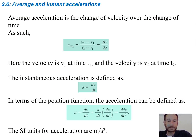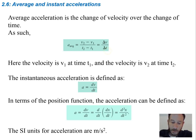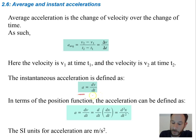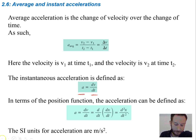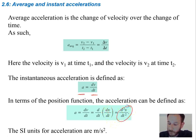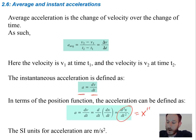Now we're talking about acceleration. Average acceleration is the change in velocity over the change in time — just like velocity was Δx/Δt, acceleration is Δv/Δt, where v1 is the velocity at time 1 and v2 at time 2. Instantaneous acceleration is the derivative: a = dv/dt, which is the second derivative of position, written as x double prime. The SI units for acceleration are meters per second squared.